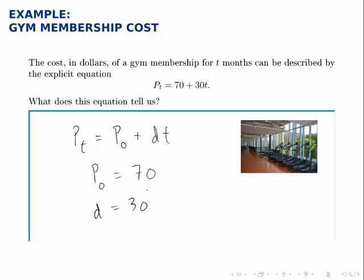Thinking in terms of the problem we're given, the initial cost corresponds to a sign-up fee. So it costs $70 to sign up for an account at this gym, and then each additional month adds on $30 in cost.